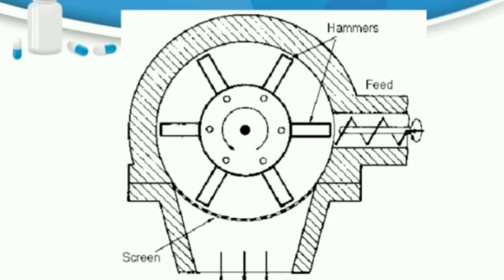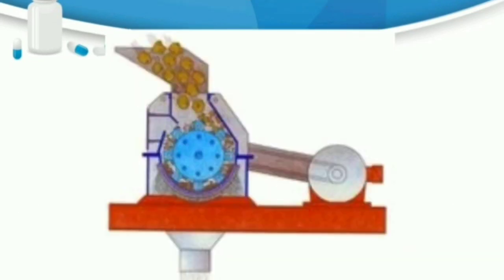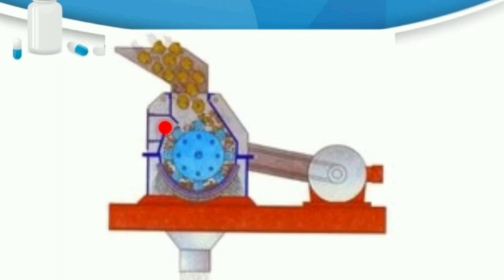Regarding working: when the mill starts, the hammers are continuously rotated in continuous motion at up to 8,000 to 15,000 revolutions per minute. Material is placed in the hopper, flows vertically, and then enters the mill horizontally. At that point, the rotating hammers beat the material, causing size reduction and producing smaller particles.